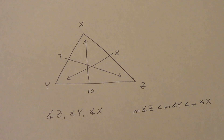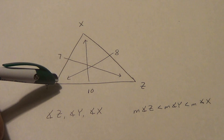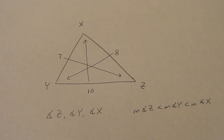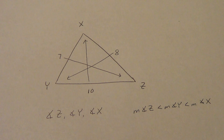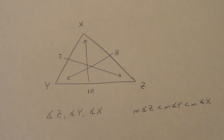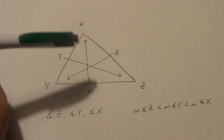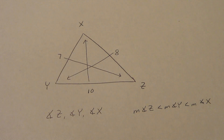One cool thing about this triangle: we could actually figure out the exact measurements of these angles using something called trigonometry — specifically the law of sines and the law of cosines. We're going to learn about trigonometry in another chapter, but most of the trig we do is only with right triangles. This is not a right triangle, so you'll likely learn the law of sines and cosines in a future class.